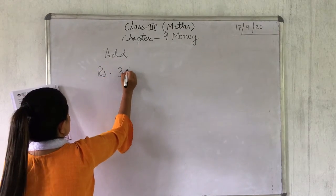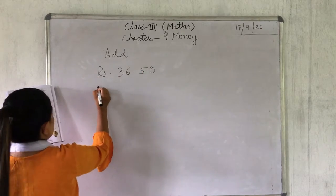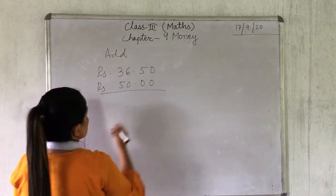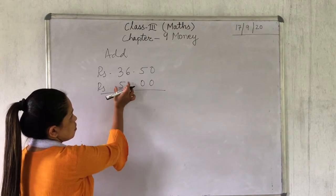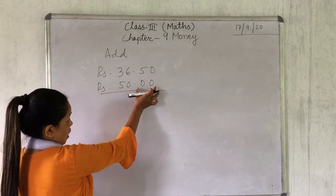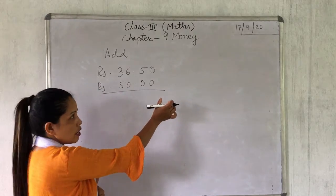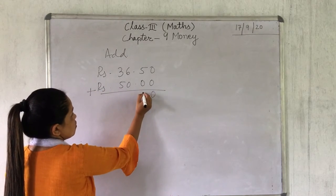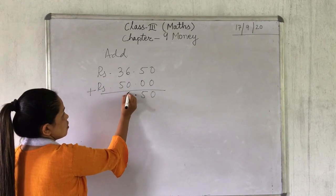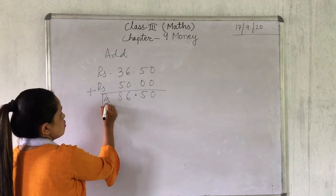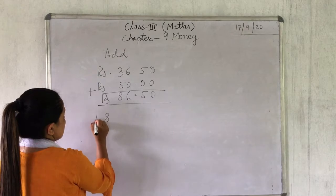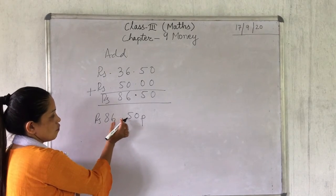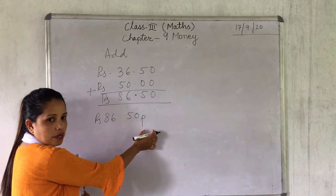Rupees 36.50 and rupees 50.00. You have to put the numbers before the point together and after the point together. Before the point is rupees and after the point is paise. Adding: 0 plus 0 is 0, 5 plus 0 is 5, 6 plus 0 is 6, 5 plus 3 is 8. The answer is rupees 86.50.